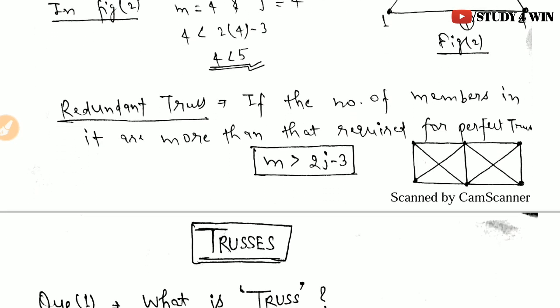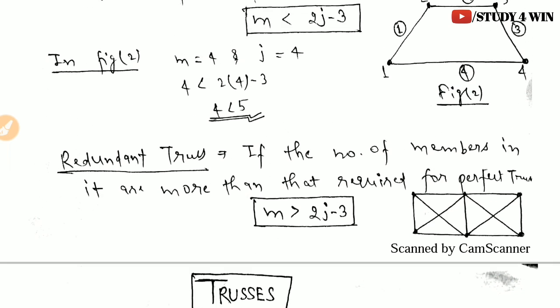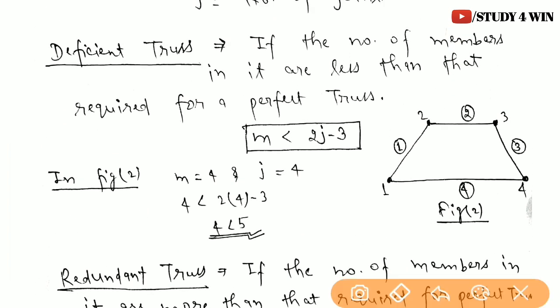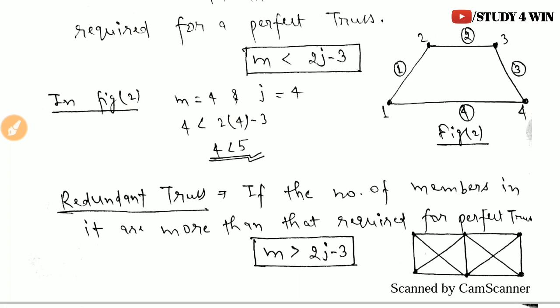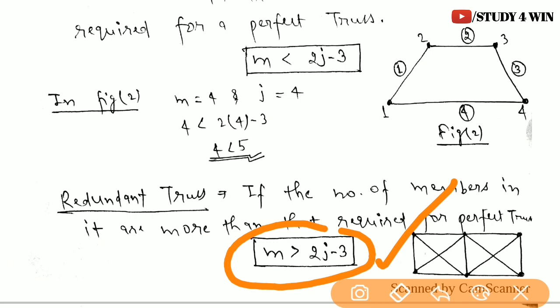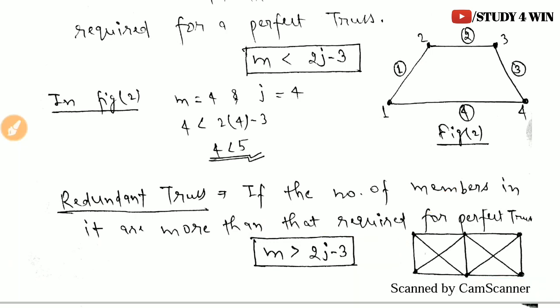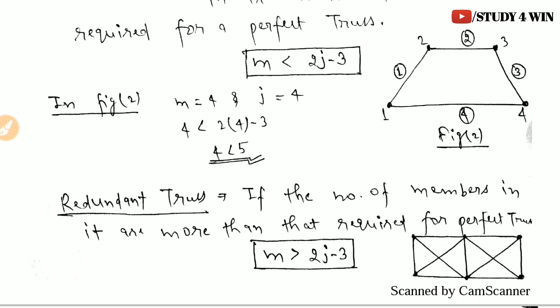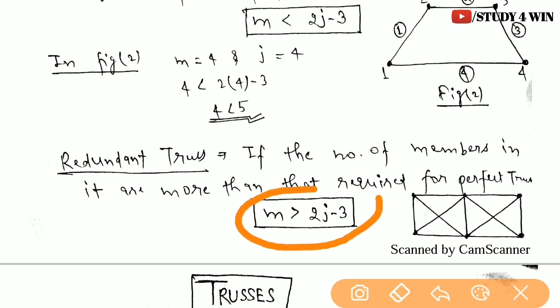Now, the redundant truss — it is just opposite to the deficient truss. In a deficient truss the equation is m < 2j − 3, but in a redundant truss the equation becomes m > 2j − 3. It means the number of members in a redundant truss are more than required for a perfect truss. In a deficient truss the number of members is less than required, whereas in a redundant truss the number of members is more than required.